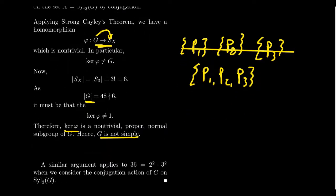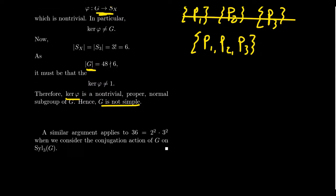I really like this argument using the conjugation action of the group on its Sylow 2-subgroups, because you can play around with this when the index is small. The symmetric group in general gets really big, but if you look at small symmetric groups — S3 has only order 6, S4 only has order 24 — so if the number of Sylow subgroups is small, you can play around with the kernel of this conjugation action and make something work. I'll leave it as an exercise to the viewer to convince yourself you can do the same thing with 36: the kernel of that conjugation action has to be a proper non-trivial normal subgroup, and therefore there are no simple groups of order 36 either.